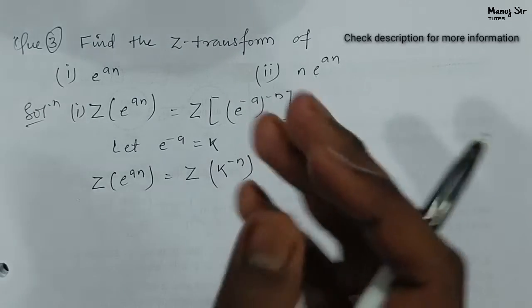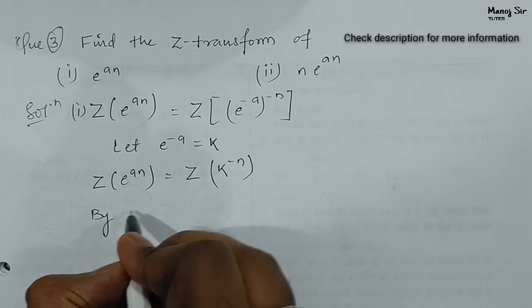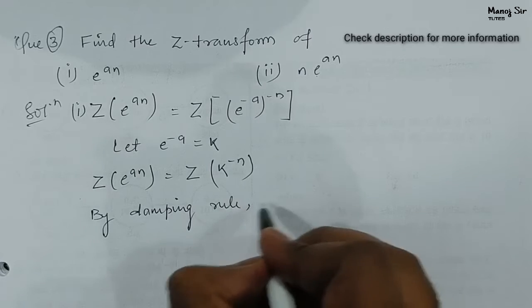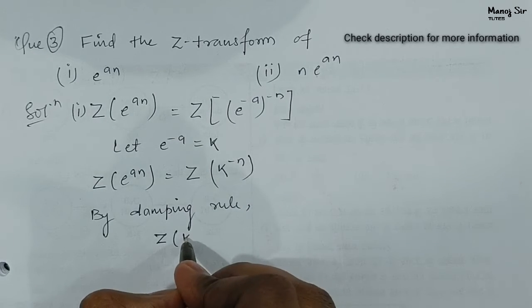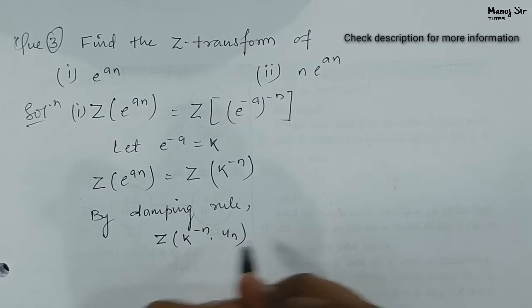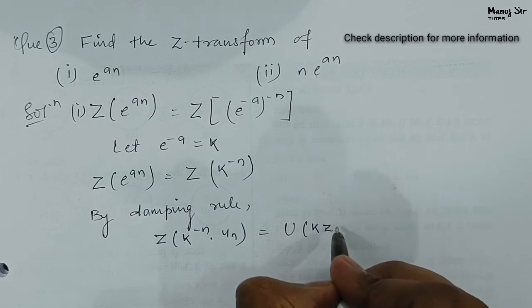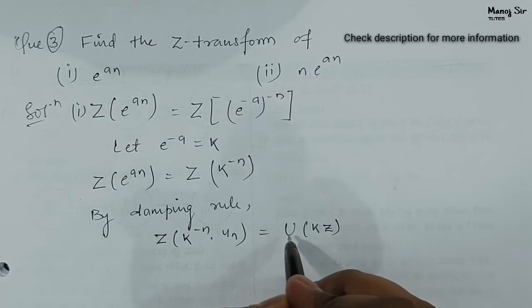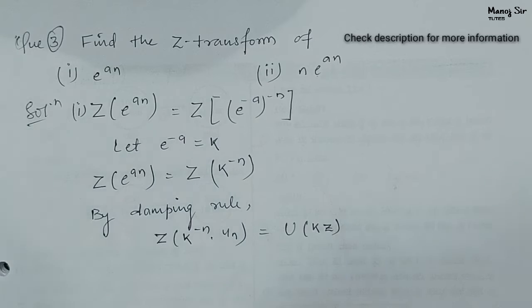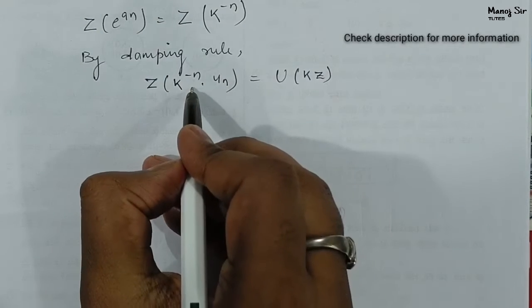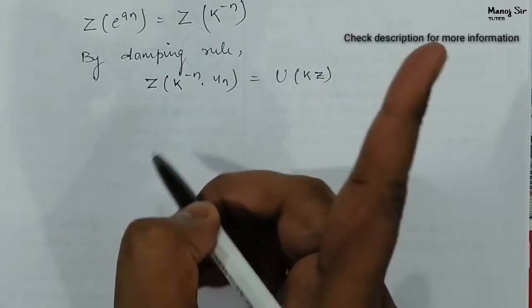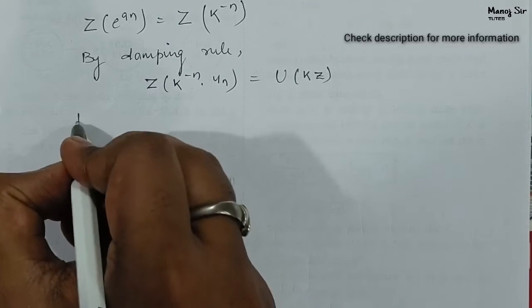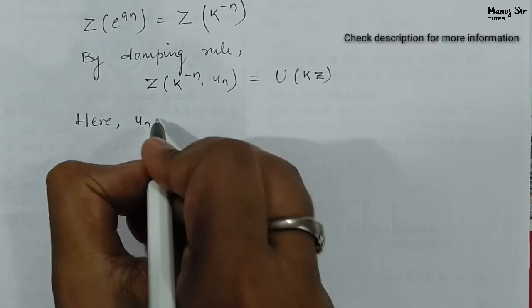Now we must know what is the damping rule. By damping rule, we know that Z transform of k to the power minus n into u(n) is equals to U(kz). If you compare this with our expression, you will get u(n) equals to 1.